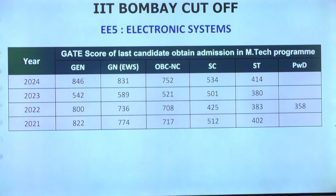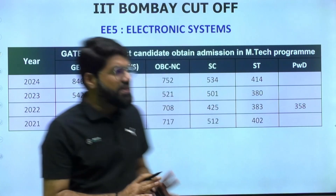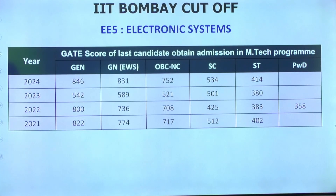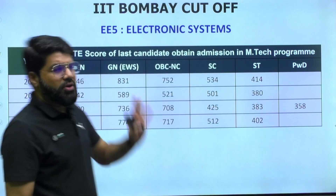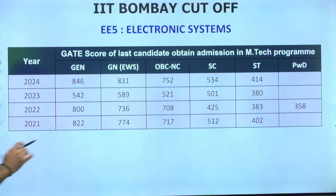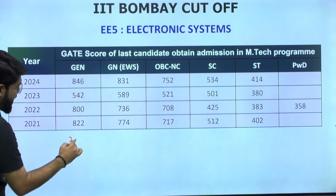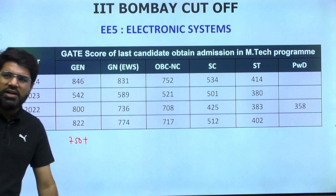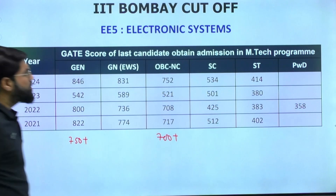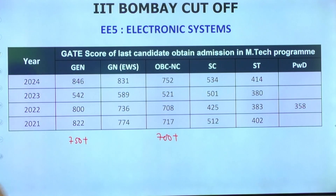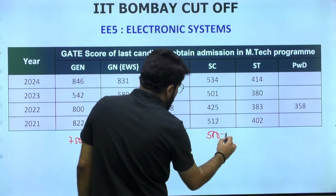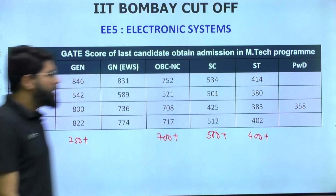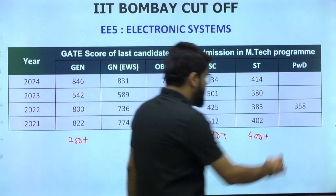Electronic Systems is my second-ranked choice — placements have been consistently decent since it's a long-established branch. The 2023 cutoff was an outlier at 842, but normally it's around 800–822. For general, 750+ is a reasonable call; OBC Non-Creamy Layer, 700+; SC, 500+; ST, 400+; and PWD, 350+ can be considered.